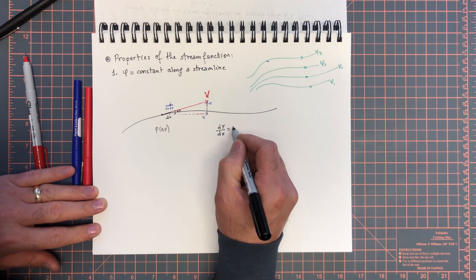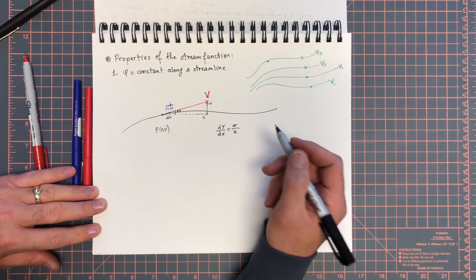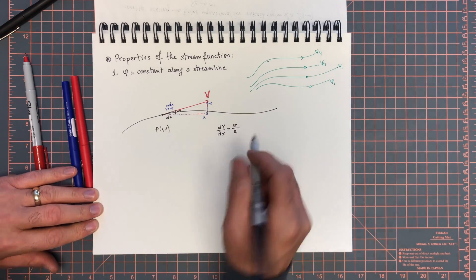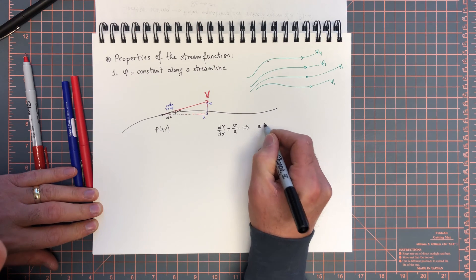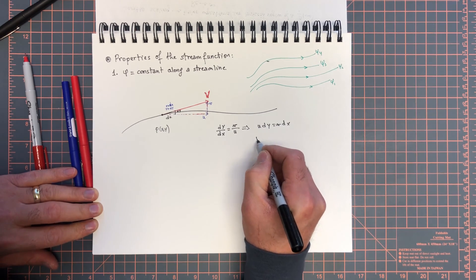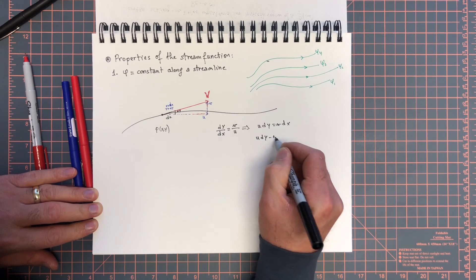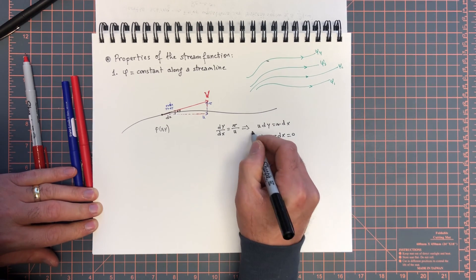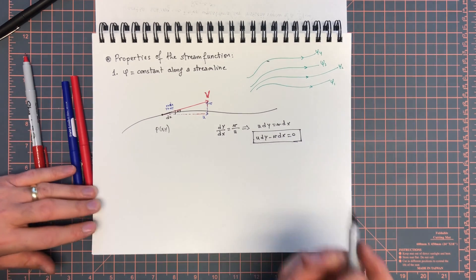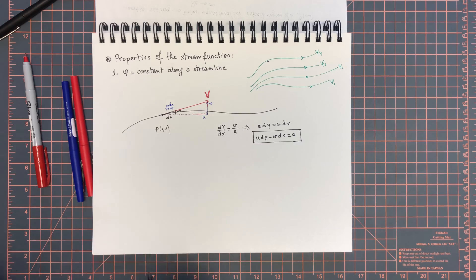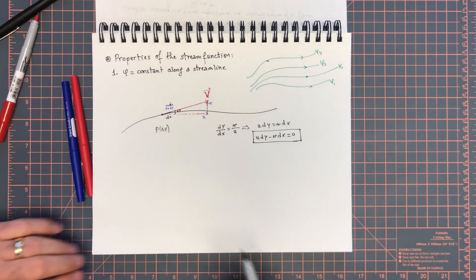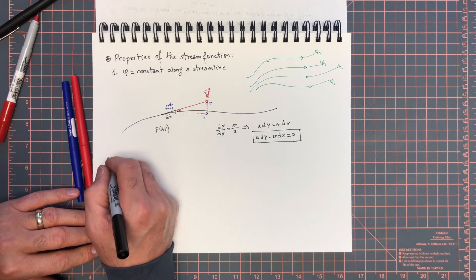In the limit of P1 approaching P2, this implies that u dy equals v dx, and really that u dy minus v dx equals zero. So that's the equation of a streamline. v is a vector here.